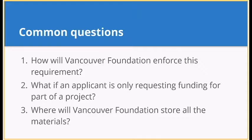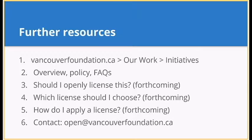The third common question is: where will Vancouver store all the materials — will there be a repository? Vancouver Foundation will not be storing these materials or creating a repository. Grantees are responsible for getting these materials online in a place that makes sense to potential users; Vancouver Foundation will be collecting links only. The field of open licenses and philanthropy is a new space, so it is a work in progress. The most immediate resource for quick questions is to email open@vancouverfoundation.ca. On the website right now we have an overview, the policy, and frequently asked questions. Forthcoming resources include guides on whether to openly license, which license to choose, and how to apply a license.